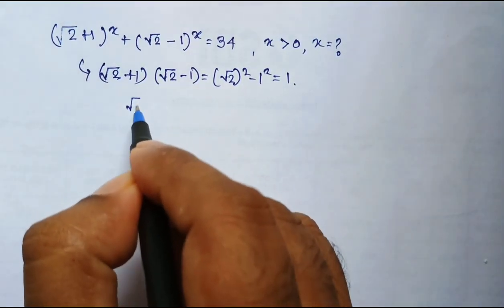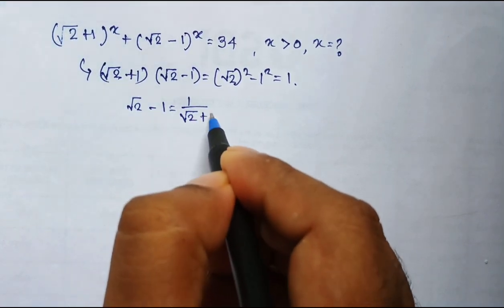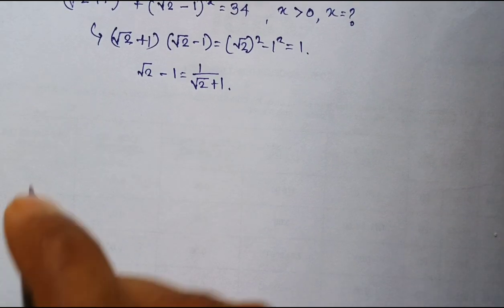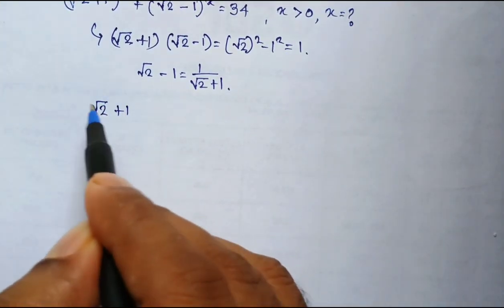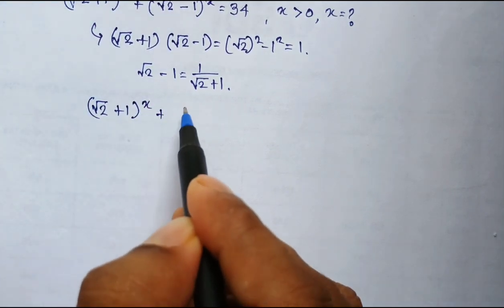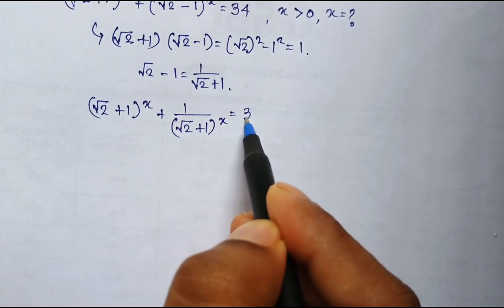Hence, square root of 2 minus 1 can be written as 1 by square root of 2 plus 1. So the above formula can be written as square root of 2 plus 1 whole to the power x plus 1 by square root of 2 plus 1 whole to the power x equal to 34.